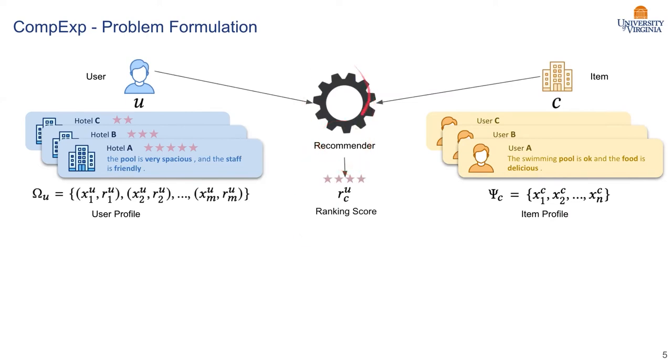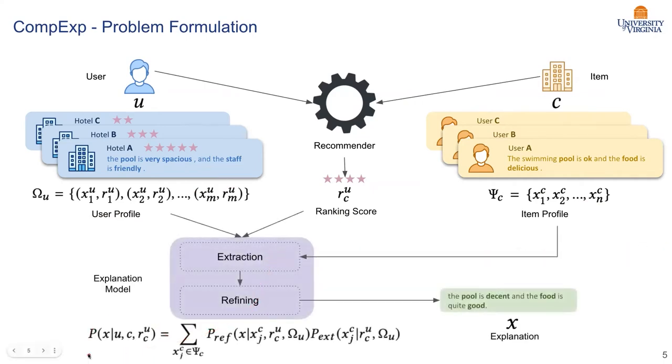Then, our solution does not want to propose another recommendation algorithm. We assume there is a given recommender, which anyone, any working algorithm that people use. The only requirement is this recommender will predict a rating or ranking score. Here, as this recommender takes this user U and the item C, they will predict that this ranking score for this pair. Then our explainer, explainable solution is trying to condition on all this provided information, trying to predict a probability of the explanations X.